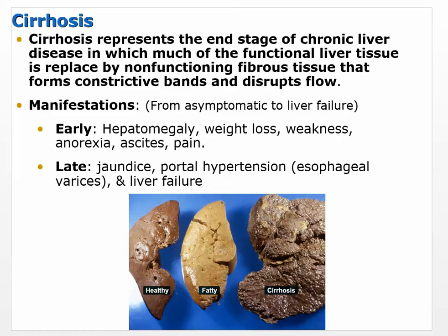Cirrhosis represents the end stage of chronic liver disease in which much of the functional liver tissue is replaced by non-functioning fibrous tissue. It forms constrictive bands and disrupts flow. In general, you've damaged the liver and it's going to be pretty permanent because those cells that were once functional have been replaced by scar tissue.